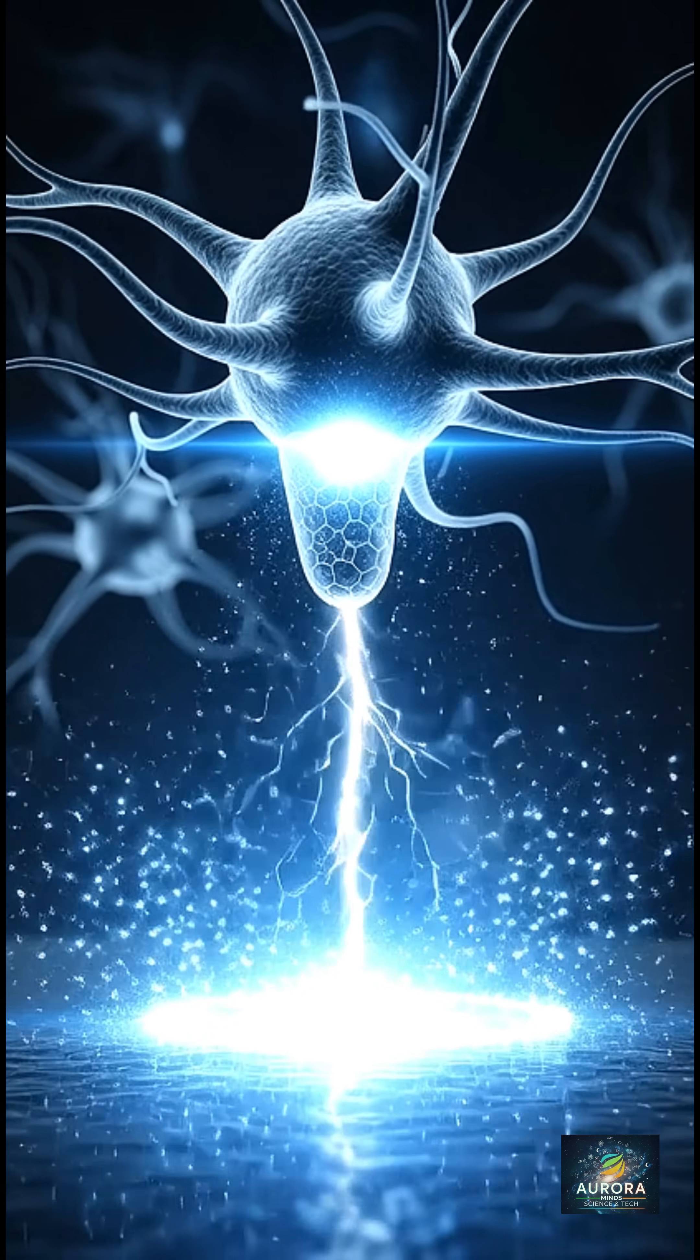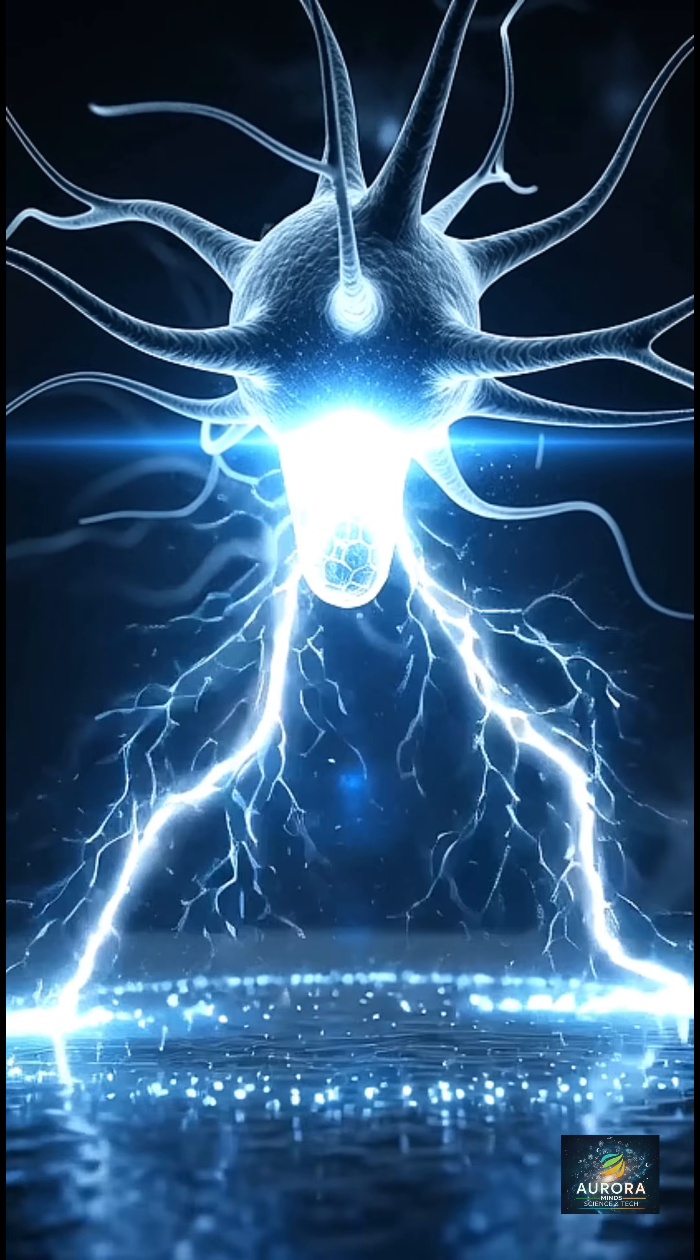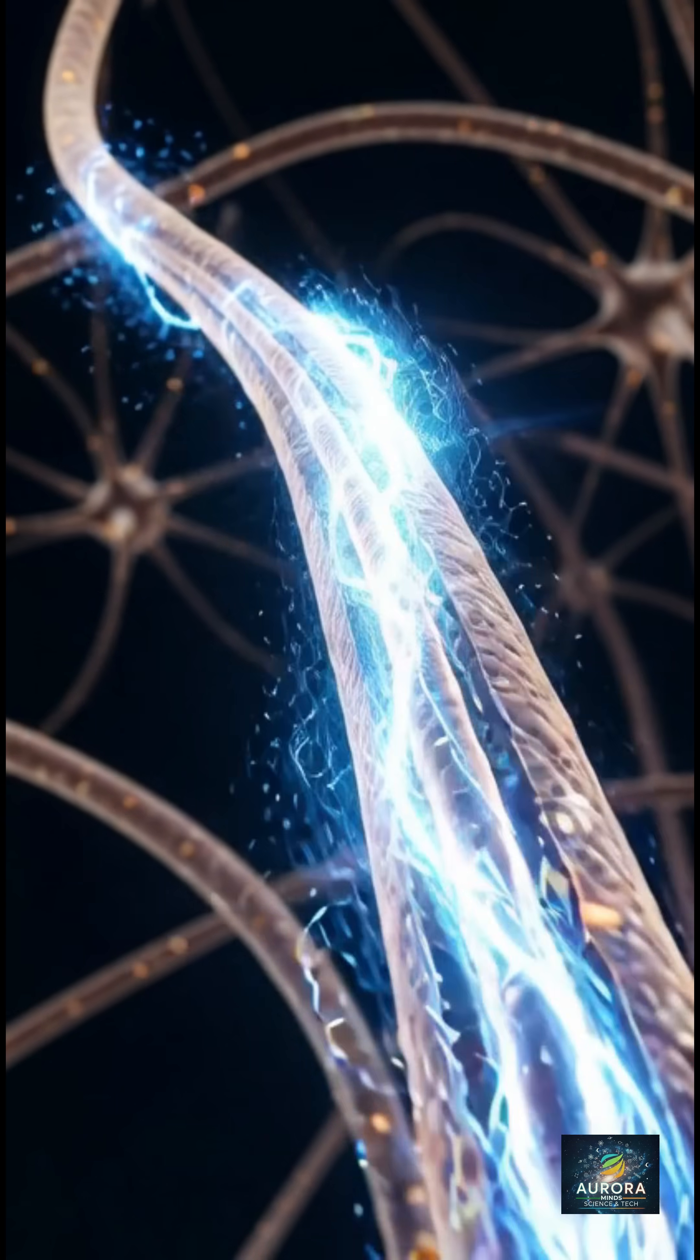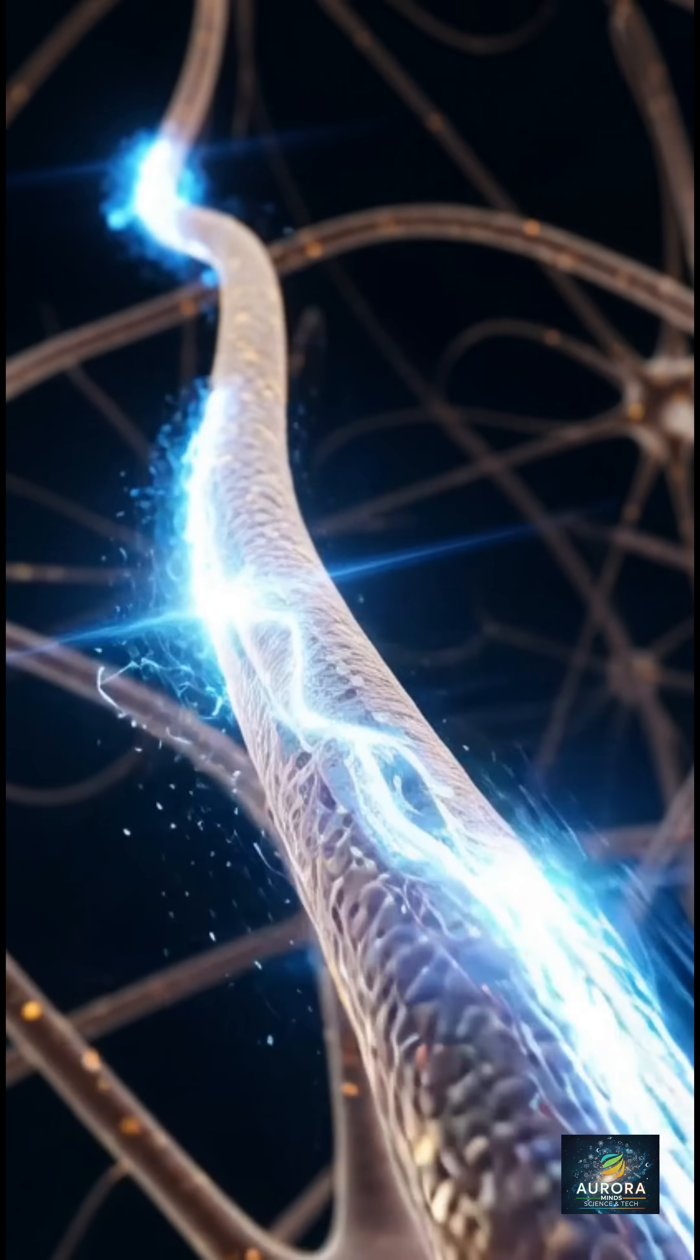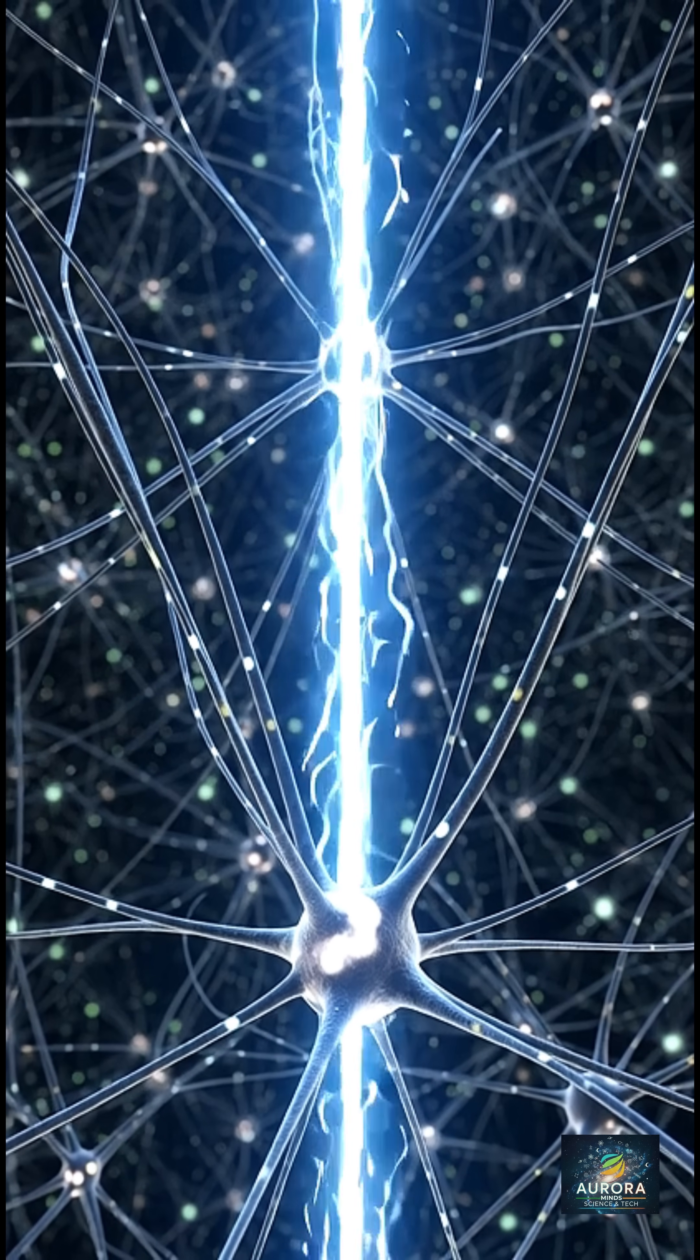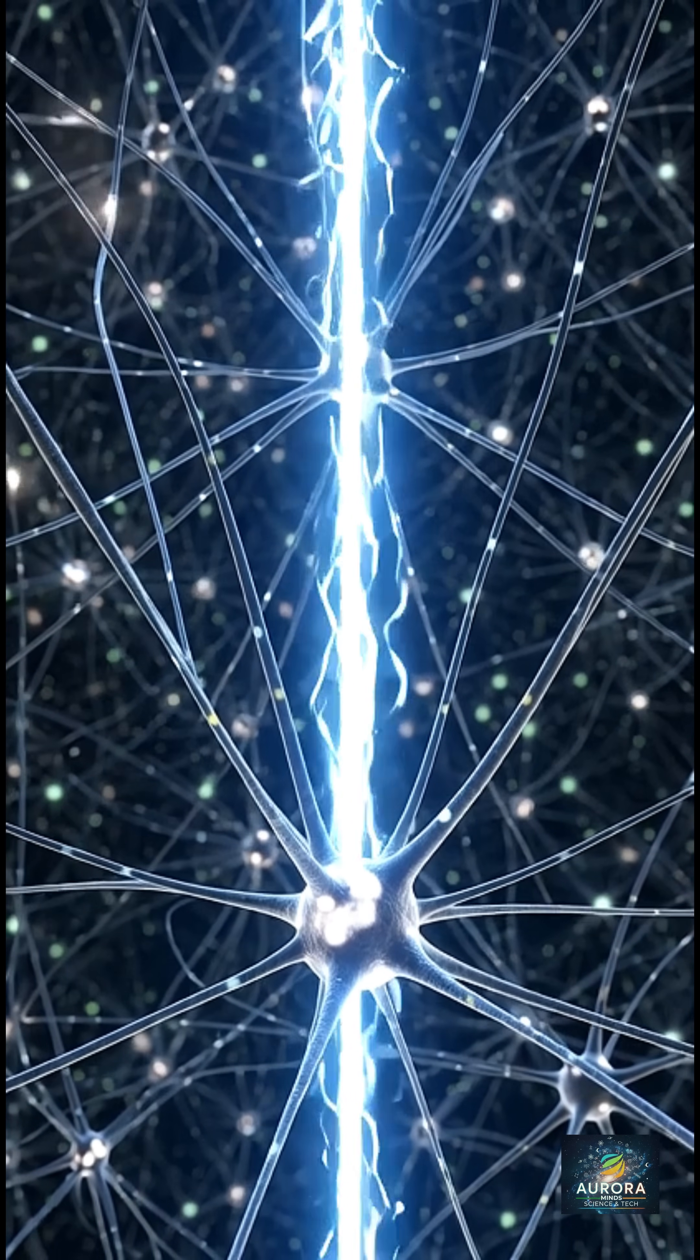It all begins with an electric spark. What happens is a rapid electrical signal, an action potential, zipping down a neuron's long arm, the axon. Why is this crucial? It's the essential first step for lightning-fast information transfer over distances in your brain.